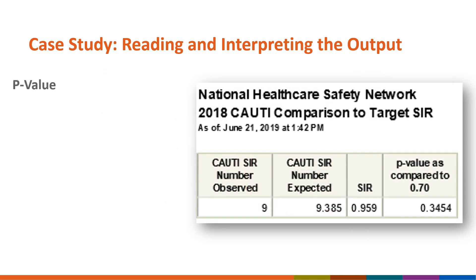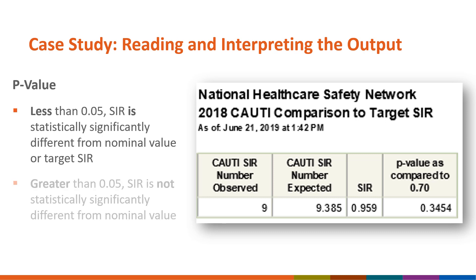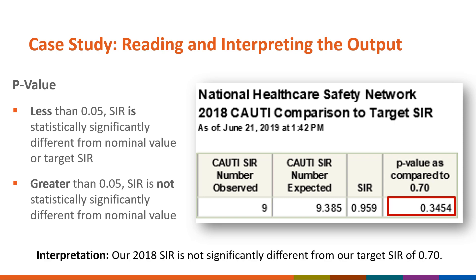The p-value tells us if our SIR is statistically significantly different from our target SIR. We use 0.05 as a cutoff. If the p-value is less than 0.05, then the SIR is statistically significantly different from the nominal value or target SIR. If the p-value is greater than 0.05, then the SIR is not statistically significantly different from our nominal value. In our case, the p-value is 0.3454, which means that our 2018 SIR is not statistically significantly different from our target SIR of 0.70.